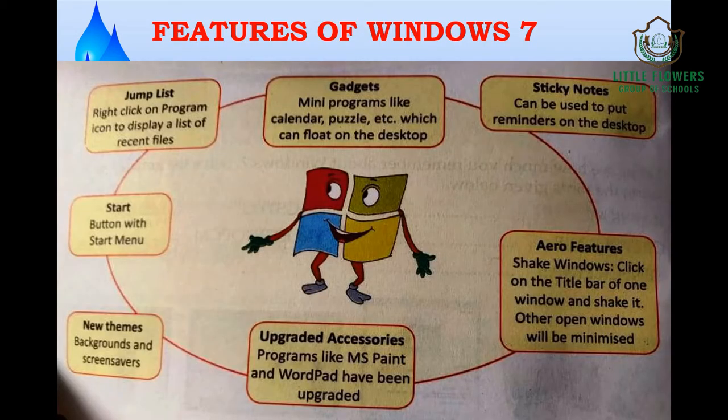These are a few features of Windows 7. We have various gadgets like mini programs — calendars, puzzles, clock, etc. — which can float on the desktop. We have sticky notes which can be put on the desktop to remind you of anything. We also have Aero features like Shake Windows, where you can click on the title bar of a window, shake it, and other windows will be minimized.